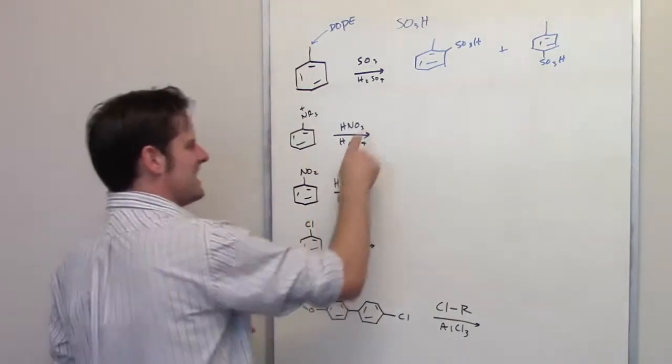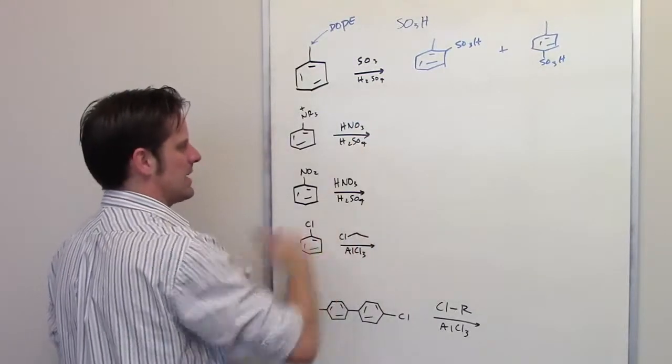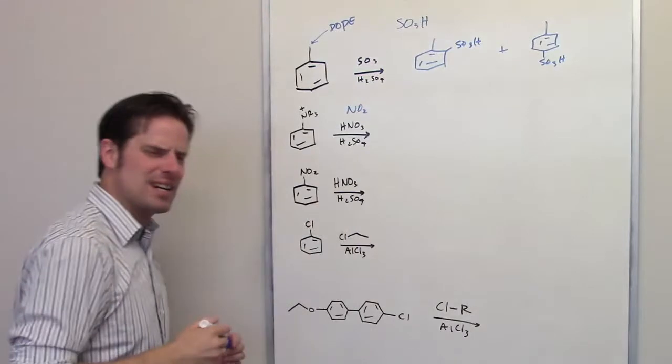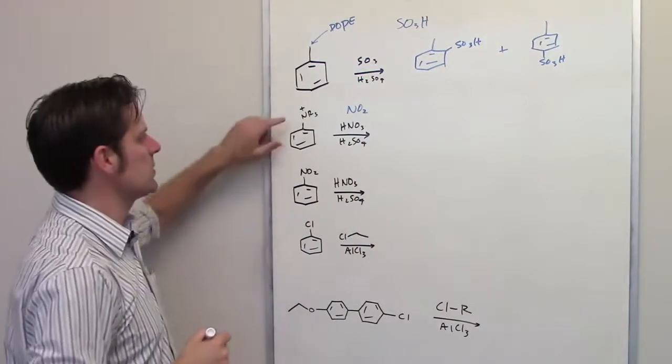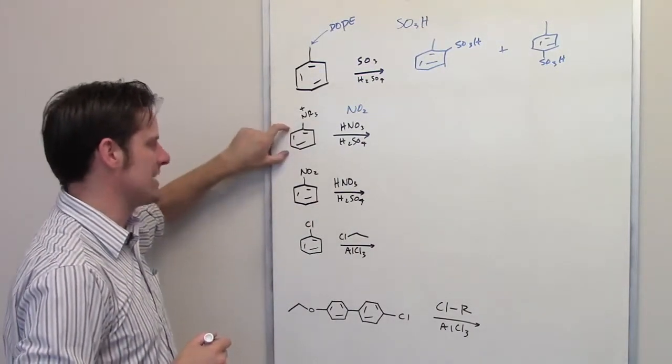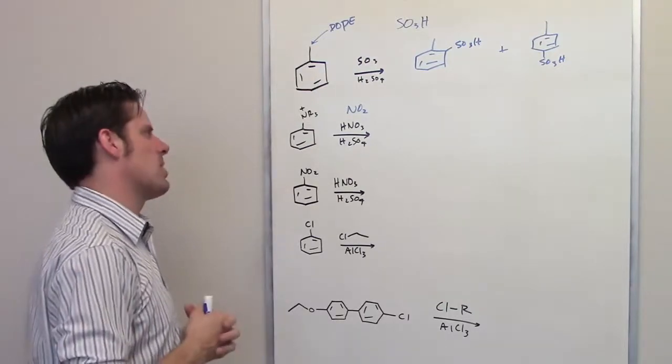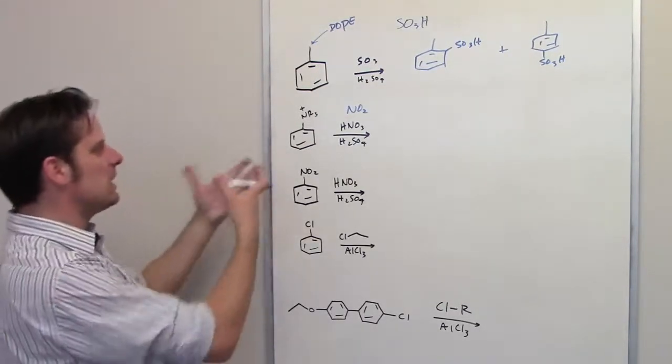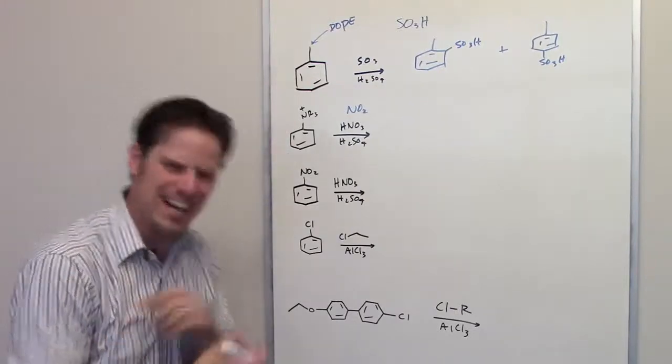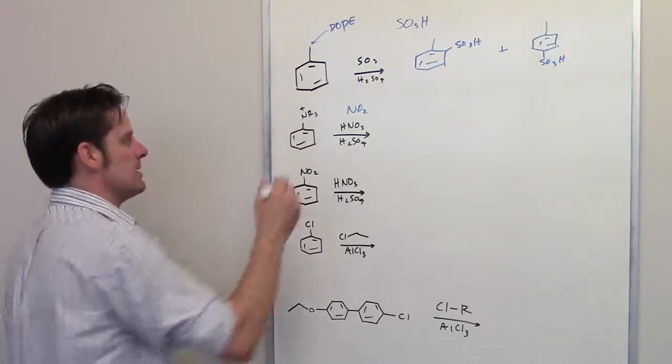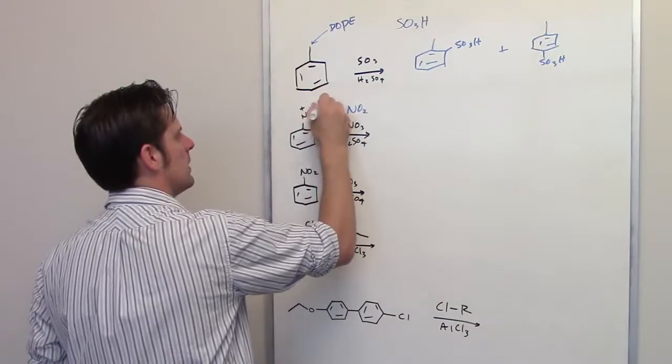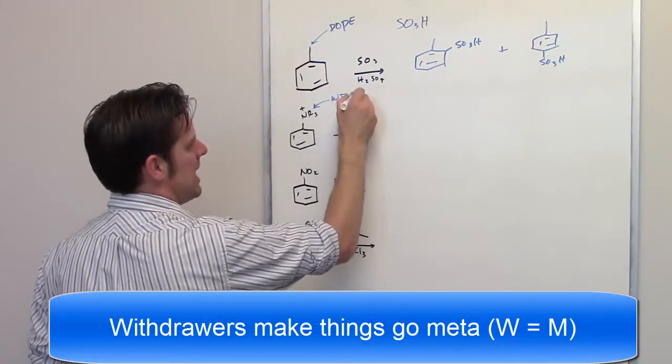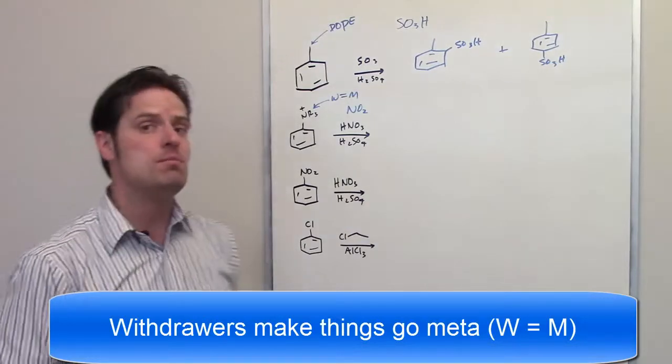Let's look at our next one. These conditions, nitric acid, catalytic sulfuric acid, what do they do? They place a nitro group onto the ring. Where does that nitro group go? Well, it depends on the nature of the substituent that's already attached to the ring. What is an NR3+? That is a quaternary ammonium salt dangling off of a benzene ring. What kind of group is that? Well, that group is a withdrawer. What is a withdrawer? Well, a withdrawer, we have to remember W equals M. Withdrawers are meta directors.